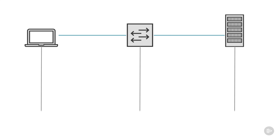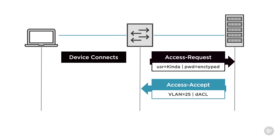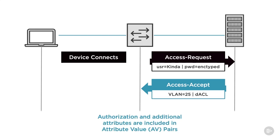RADIUS, unlike TACACS+, requests authorization at the same time it asks for authentication. When a user tries to connect to the network, the network device — the AAA client — sends an access request message to the AAA server, asking if the client can be both authenticated and authorized. The AAA server will respond with one of three messages. An access accept message means the person requesting access is authenticated, and the authorization result is included in the access accept message as an attribute value (AV) pair.